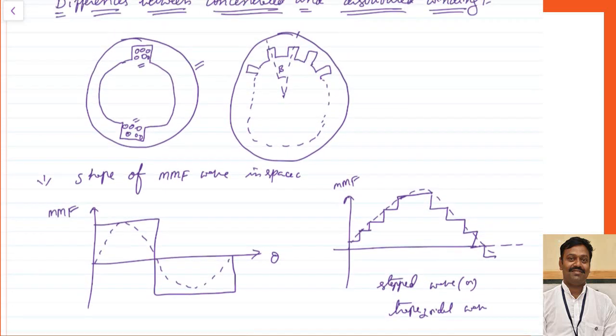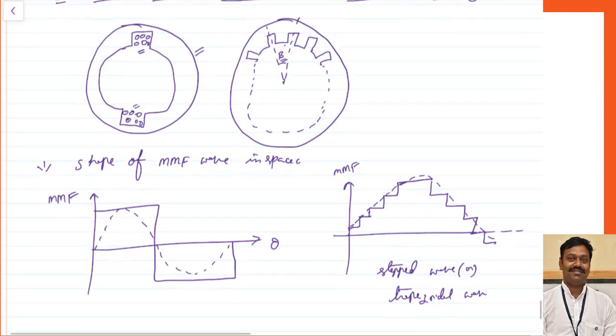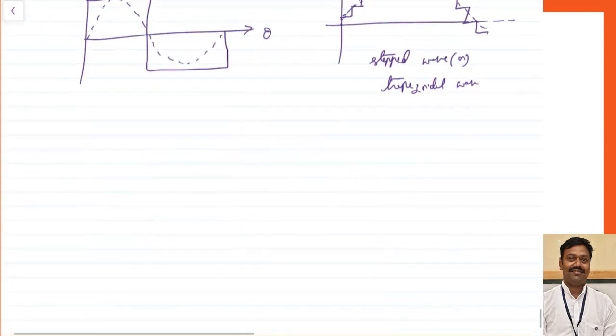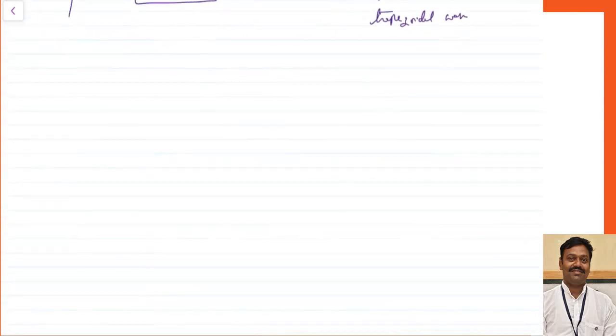Out of this wave, if we can make the angle between two slots — this beta — very small, this will approximate nearly to the sine wave. That is the advantage of distributed winding concerning the EMF.